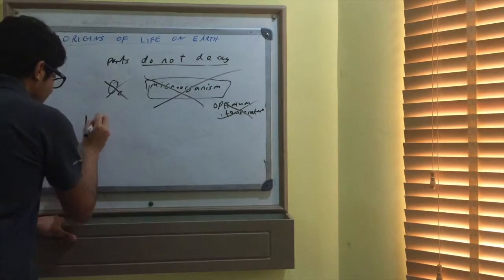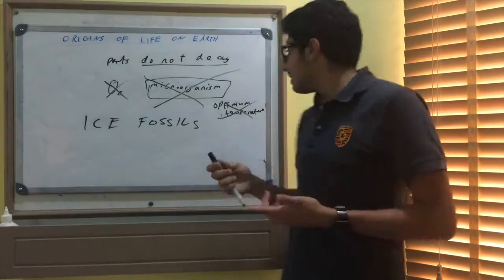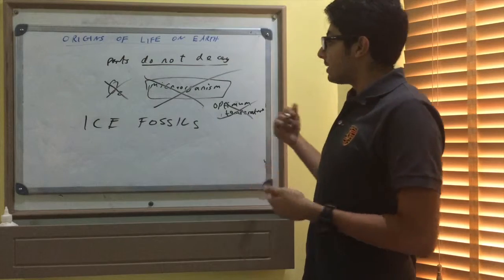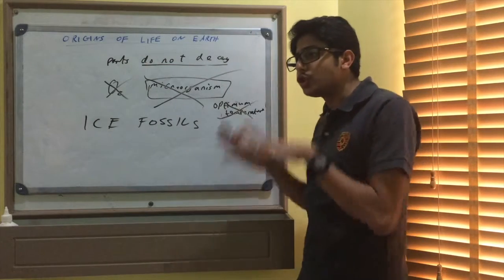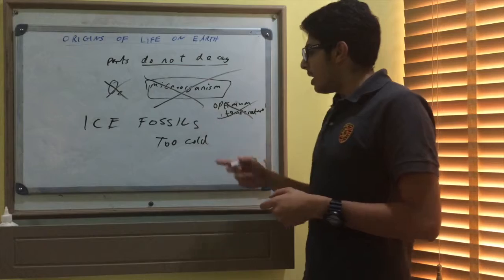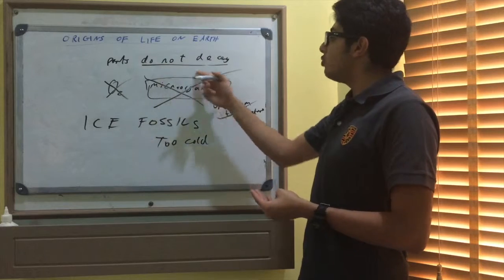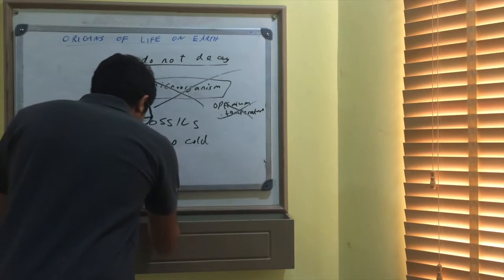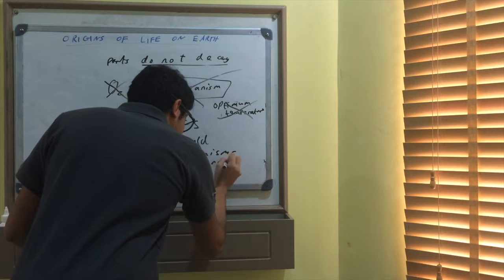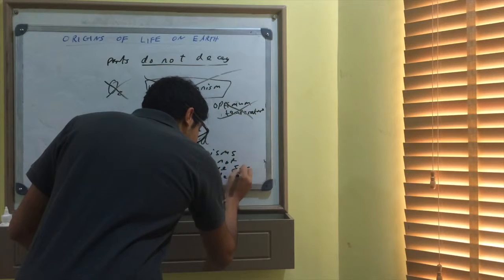An example of this is ice fossils. The temperature of ice fossils, say in the Arctic or Antarctica - the temperatures are too cold for the microorganisms to survive. The microorganisms die, and without microorganisms, decay cannot occur. That's why they do not decay. Too cold, microorganisms cannot survive for decay.